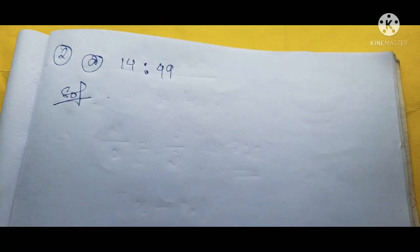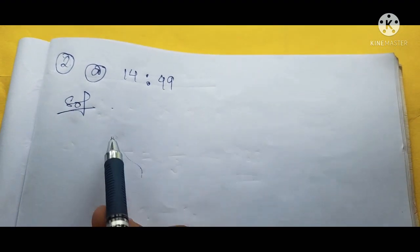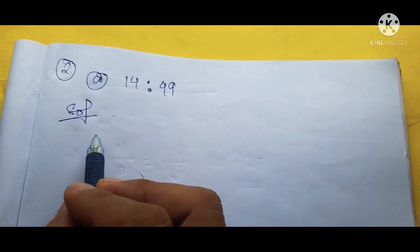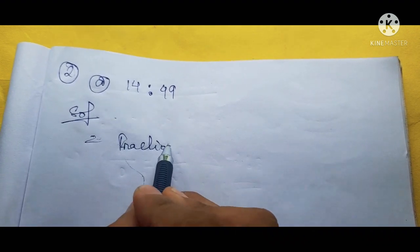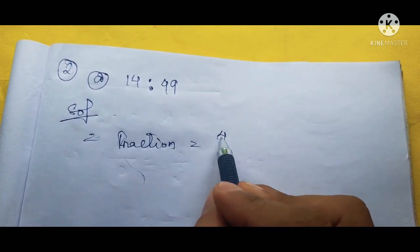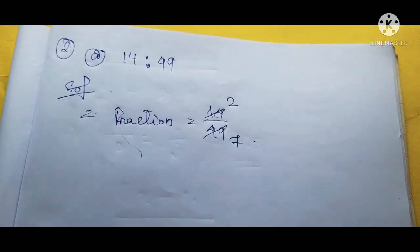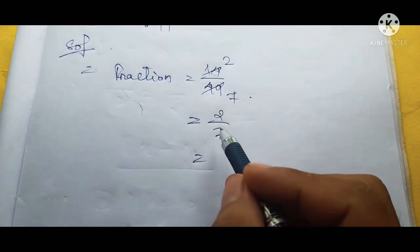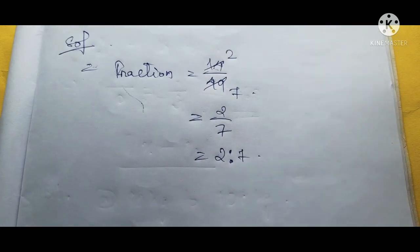Now we will do question number 2: express the following ratio in their simplest form. Question 2A is 14 is to 49. We make it into a fraction: 14 by 49. Cancelling by 7 — 7 twos are 14, 7 sevens are 49 — we get 2 by 7. Converting to a ratio: 2 is to 7. This is the answer.